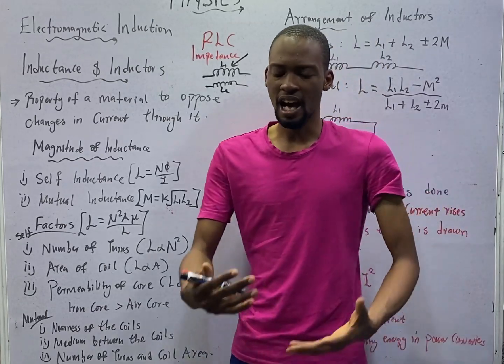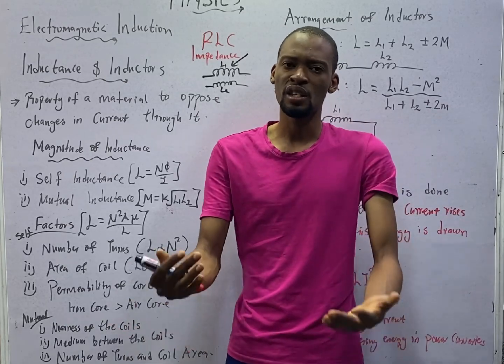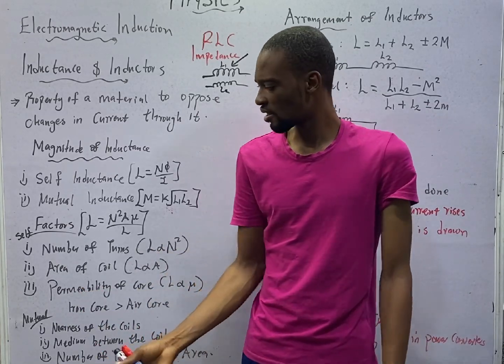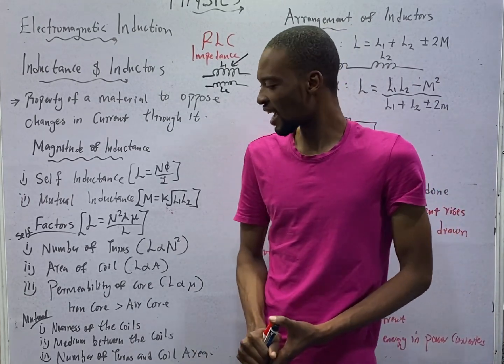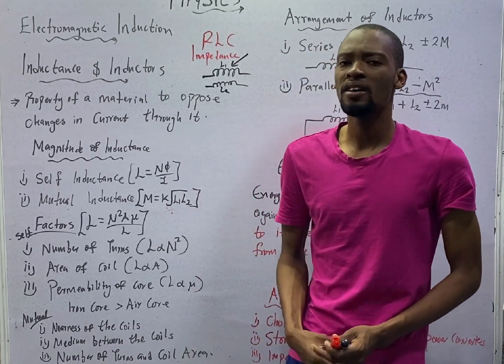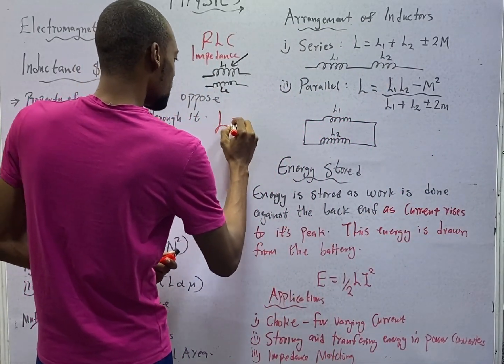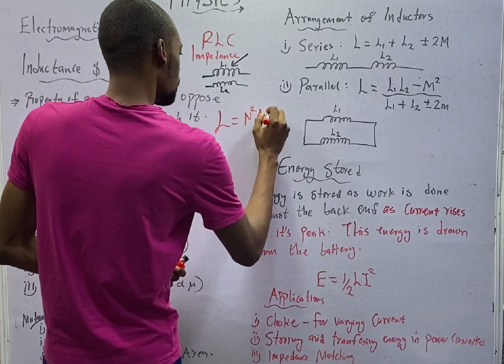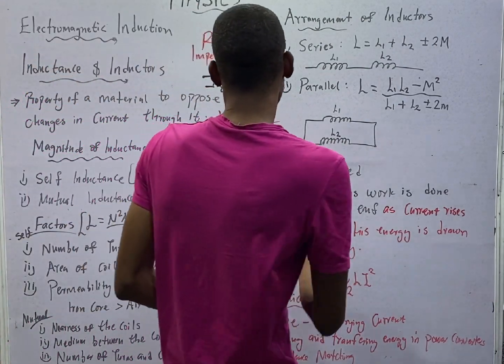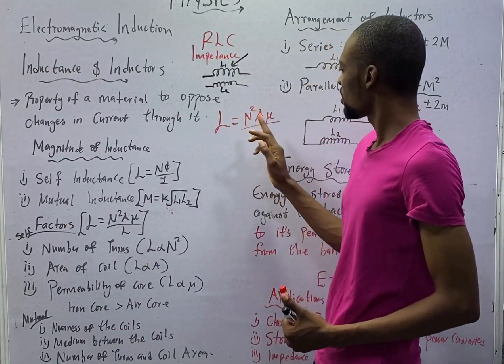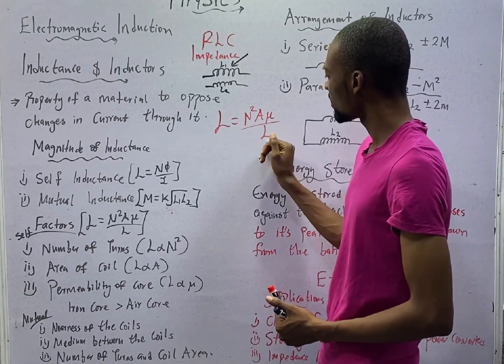What are the factors that affect increased self-inductance? And what are the factors that affect mutual inductance? They are here. The factors affecting self-inductance are the number of turns. In fact, for self-inductance, this is the formula: L is equal to N squared A mu over L. N is number of turns. A is area. This is permeability of the core. And this is length.